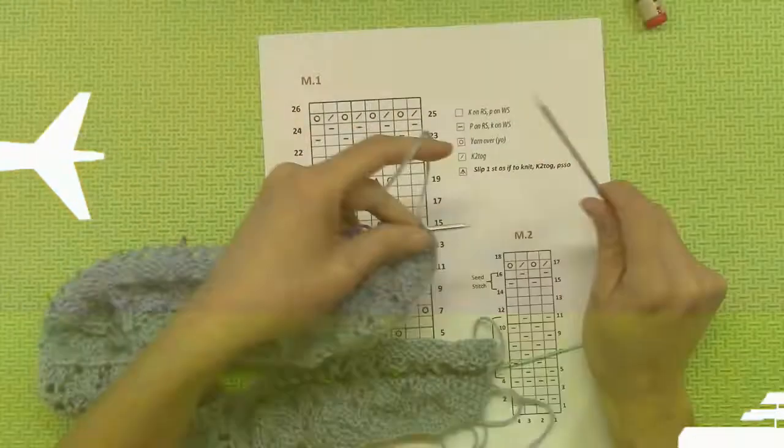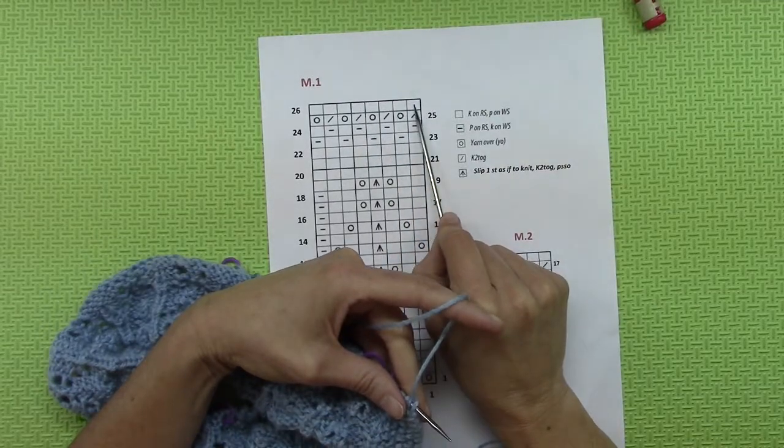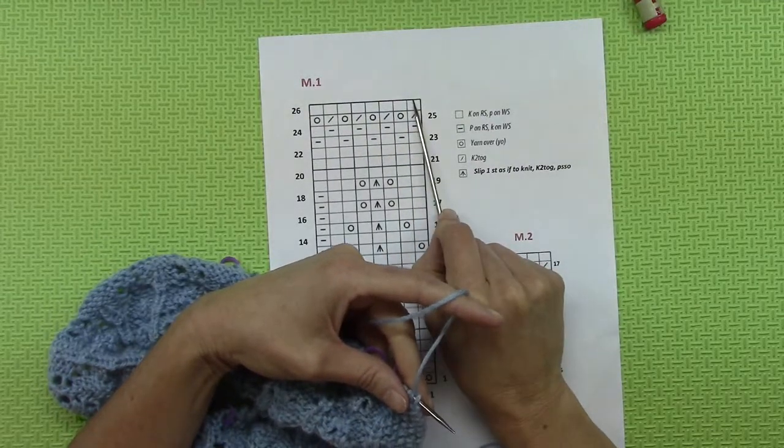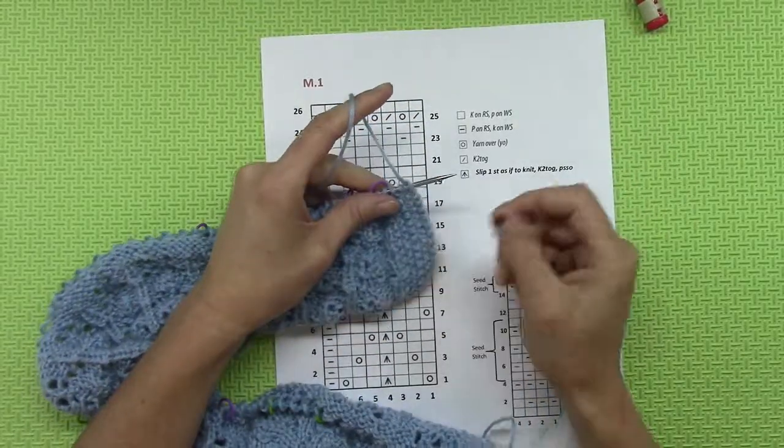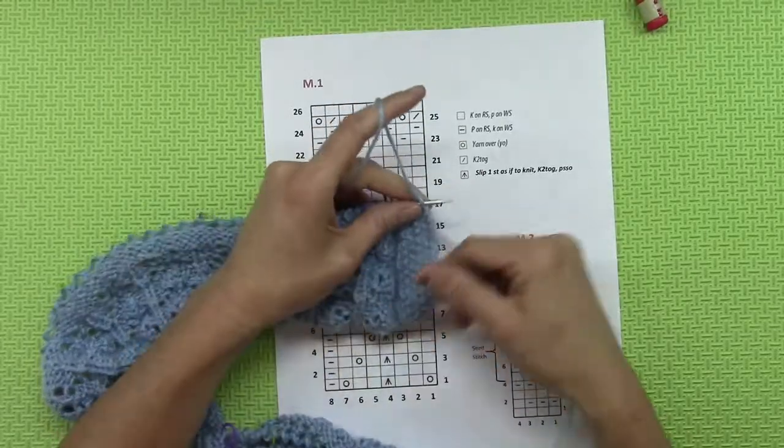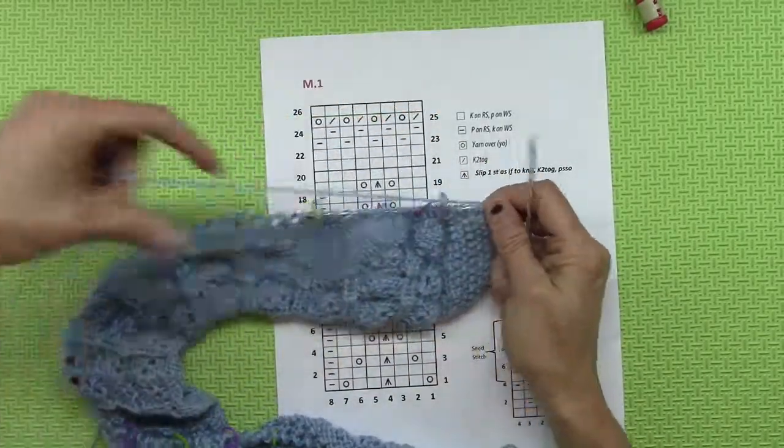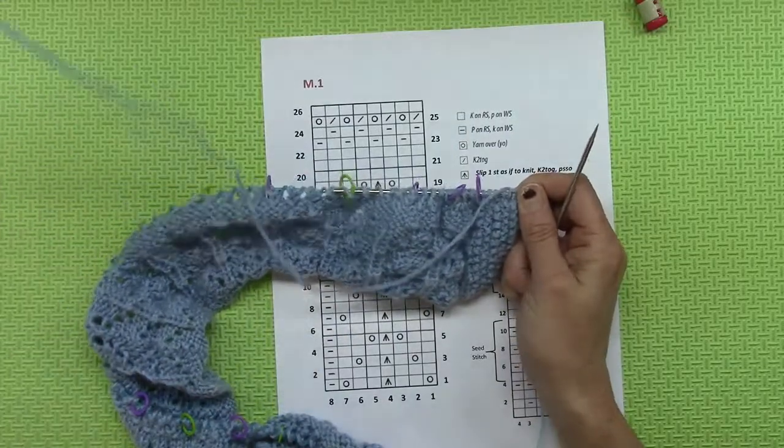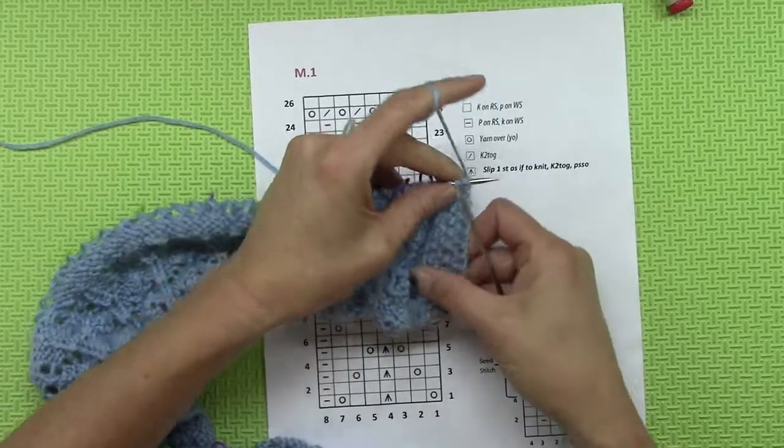Row 26 is really easy. This is the wrong side, so it's all purl. But here's the fun part: you are done with the difficult lace pattern! Woohoo, good for you! Now it gets easier, believe it or not. If you've survived this far, you're going to do just fine in knitting this little baby cardigan.